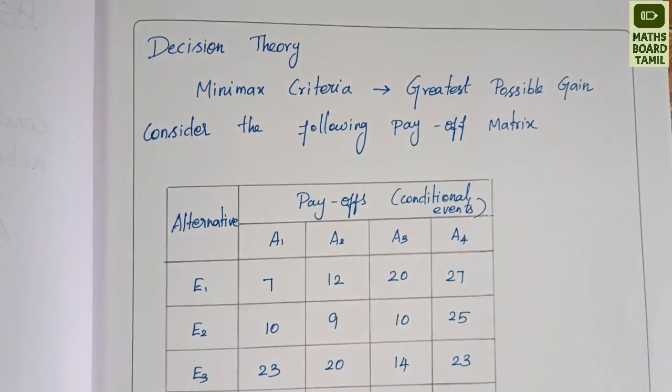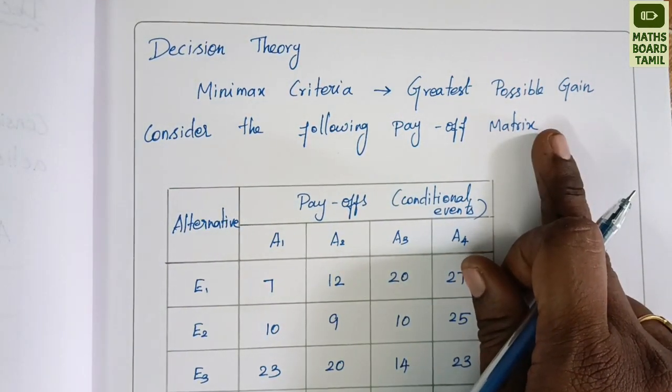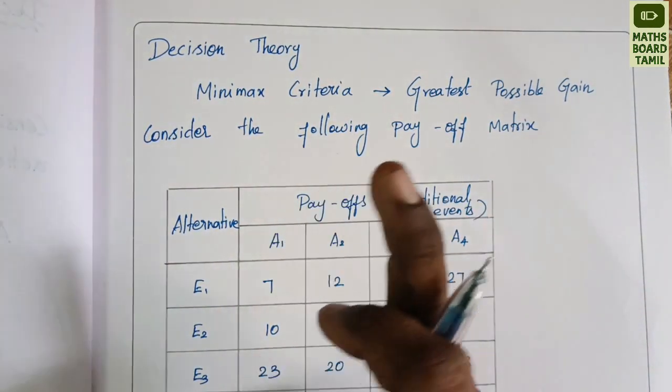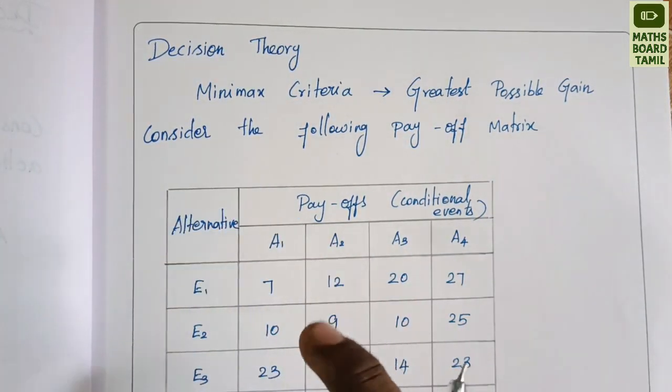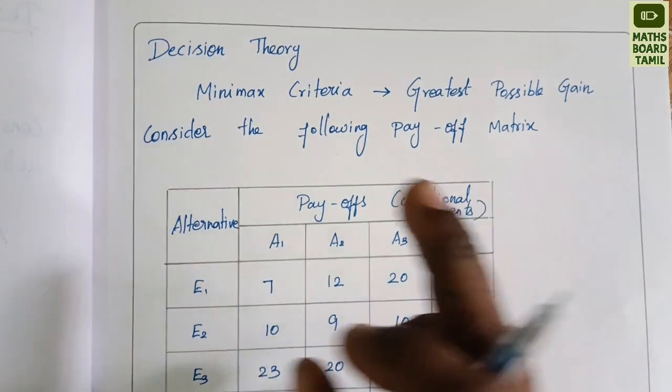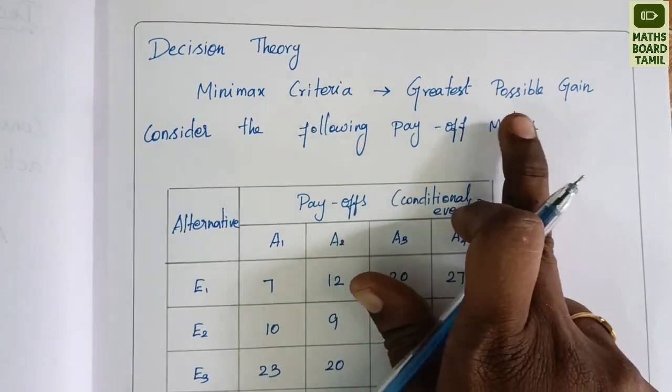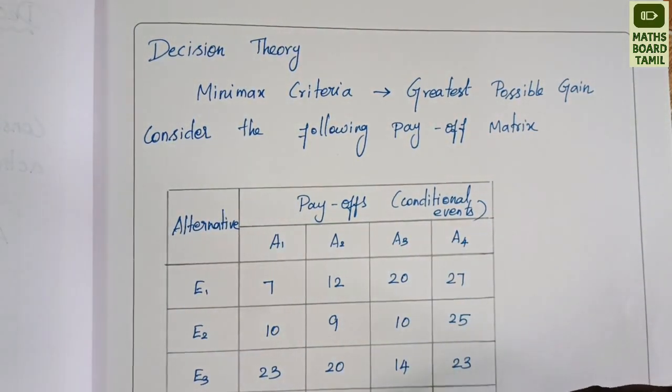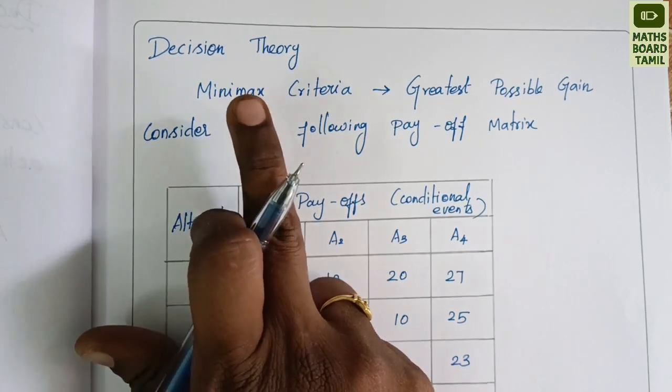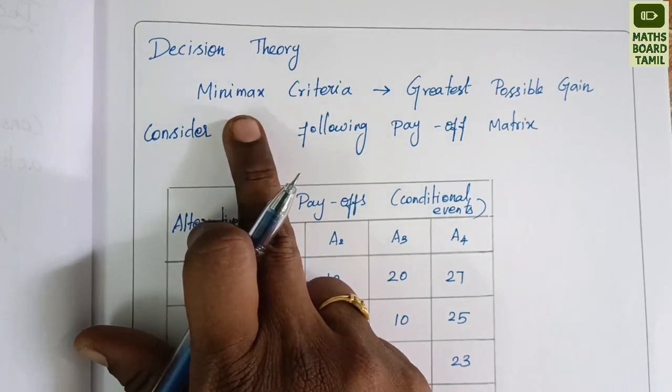Minimax Criteria is used to find the greatest possible gain or the least possible loss. Using the Minimax principle, we can determine the best alternative.